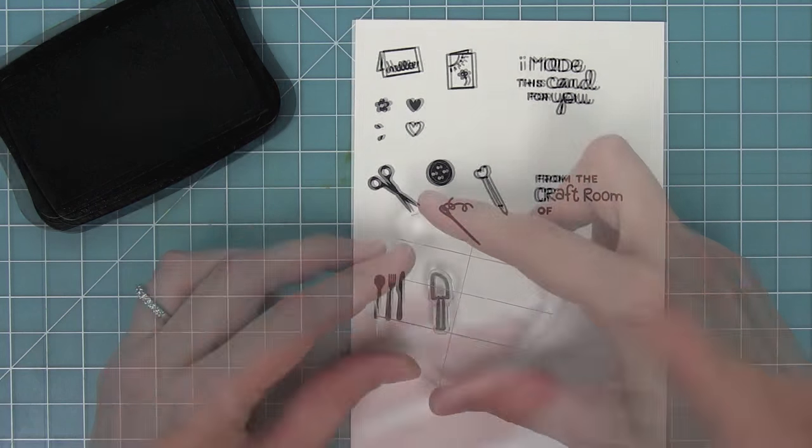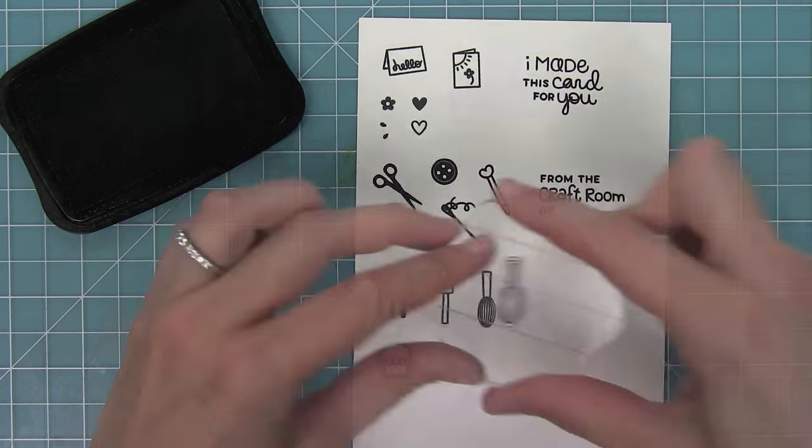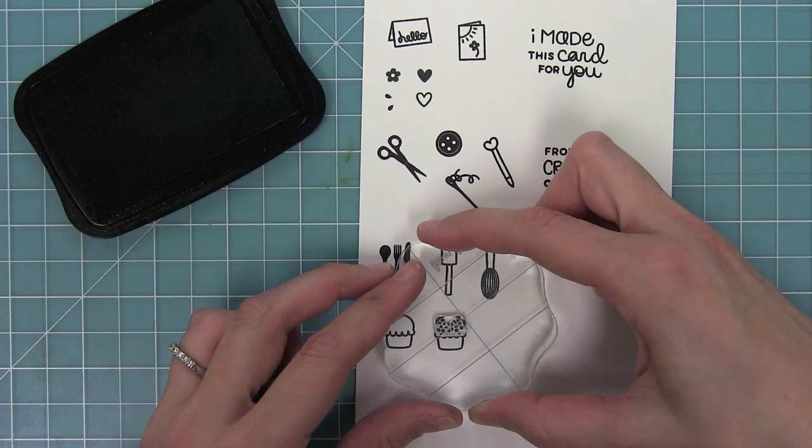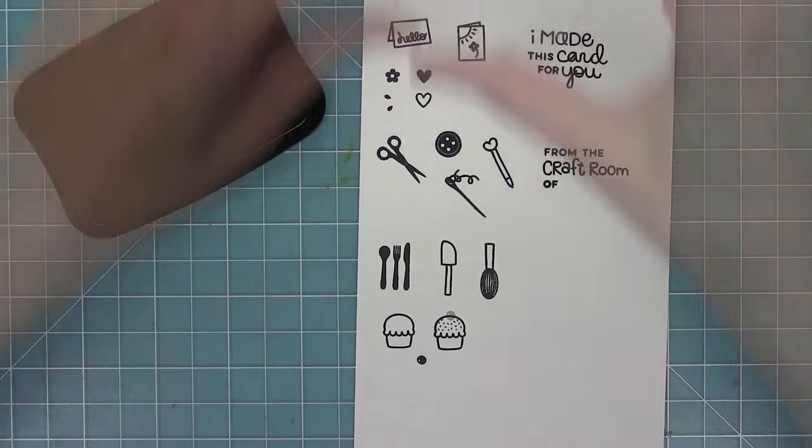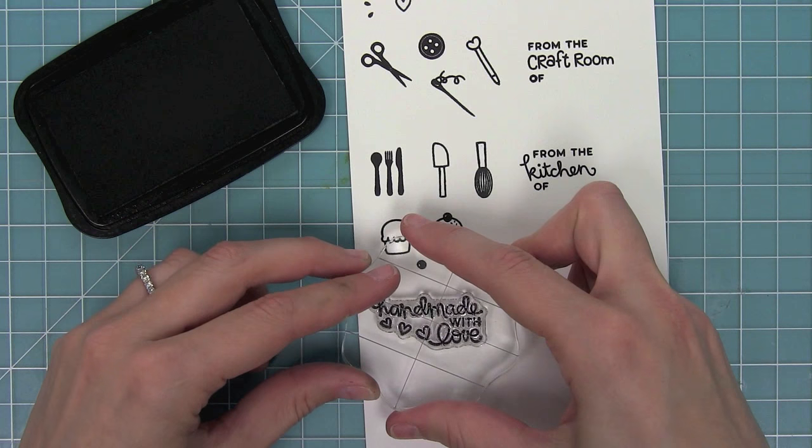Then here we've got all this silverware, a little spatula, a whisk, and this great little cupcake which you can stamp sprinkles on just like this, and you can stamp a cherry separately or right on top of the cupcake. This is perfect for from the kitchen of.